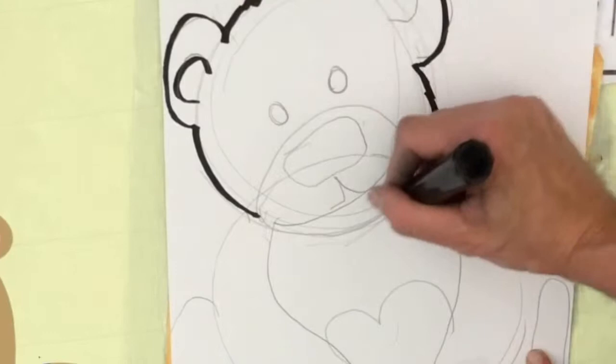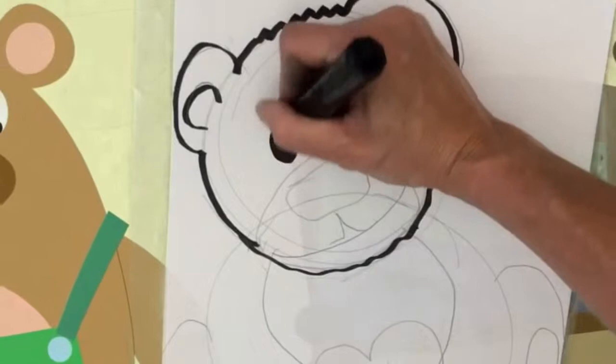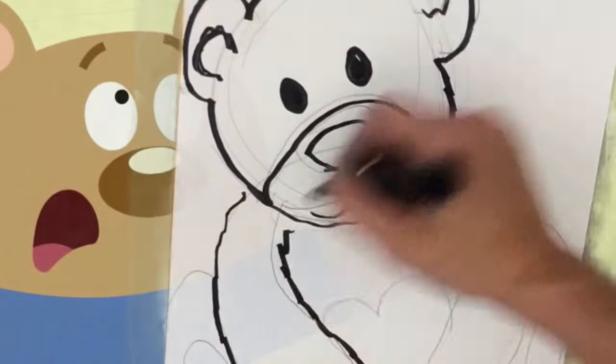Add some details like circles in his ears and a smile under his nose. Then trace over all your pencil lines with a black Sharpie. When you trace the lines, you can show texture by making the lines bumpy, because bumpy lines make it feel like the teddy bear is furry. Color in his eyes with the black Sharpie and trace over the pencil lines of the teddy bear's body.